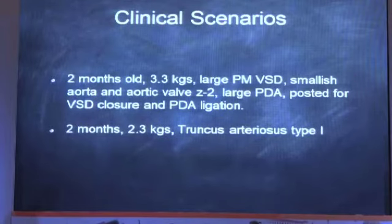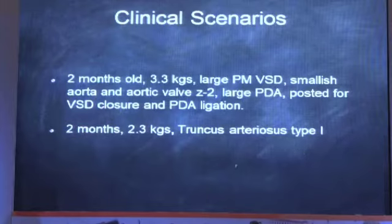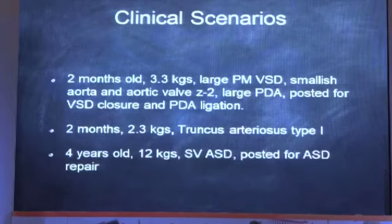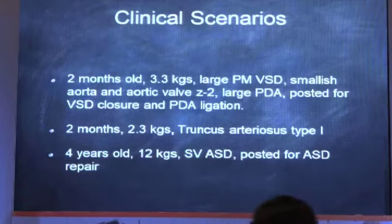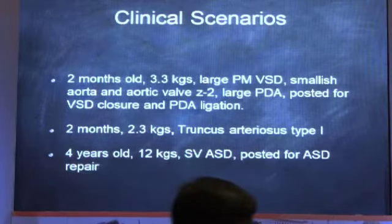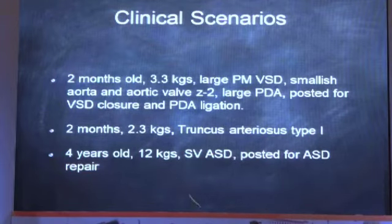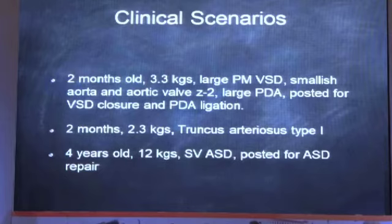Second scenario: a two-month-old, 2.3 kg child with truncus type 1. Truncus is neural crest derived, so the most common association is DiGeorge syndrome — expect difficult airways, postoperative infections, absent thymus. Third scenario: a four-year-old, 12 kg child with sinus venosus ASD posted for repair. The most common association is the right upper pulmonary vein draining into the SVC-RA junction. We should use a smaller central line so it doesn't interfere with the repair of the inflow.